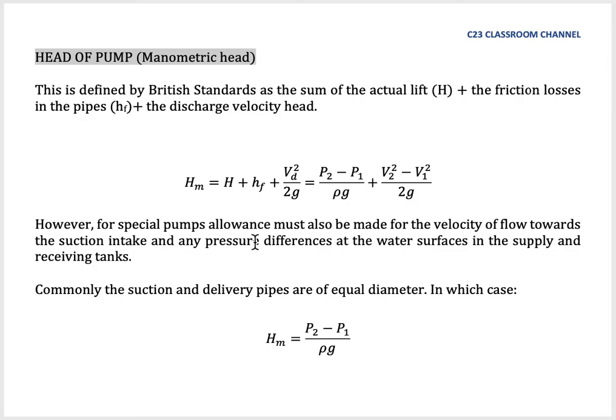However, for special pumps, allowance must also be made for the velocity of flow towards the suction intake and any pressure differences at the water surfaces in the supply and receiving tanks. Commonly, the suction and delivery pipes are of equal diameter. In this case, we could simplify that because the suction and delivery pipe, if the diameter is equal, means the velocity remains constant. It remains the same in inlet and outlet here. The value here will become zero. We could say that the manometric head here is only equal to the pressure drop, P2 minus P1, pressure at outlet minus pressure at inlet, divided by rho g.